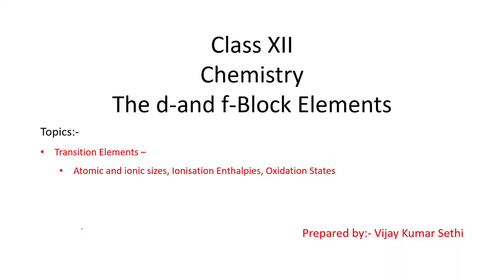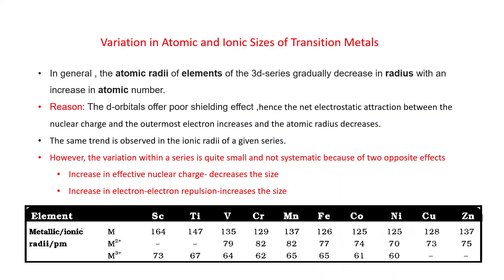Welcome to chemistry classes by Vijay Kumar Sethi. In class 12th chemistry we were discussing about the D and F block elements, and in this video we are going to discuss about atomic and ionic sizes, ionization enthalpies, and oxidation states of transition elements. First, let's look at the variation in atomic and ionic sizes of transition metals.